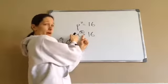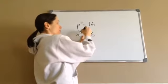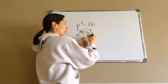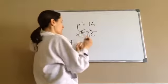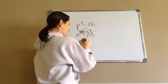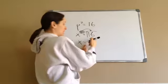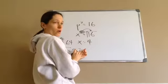So if I want to get the X by itself, when I move this square across the equal sign it actually does that, right? So now this says X equals square root of 16. The answer is 4. Okay,